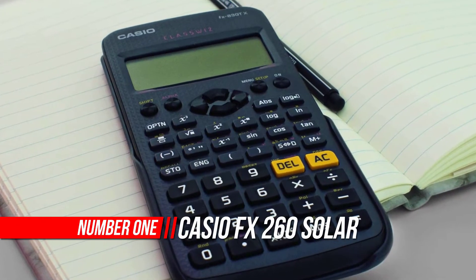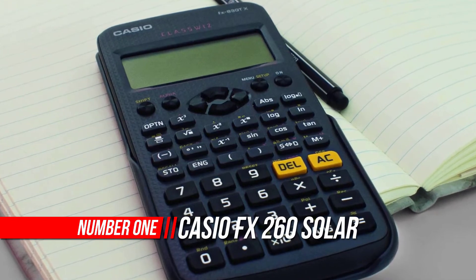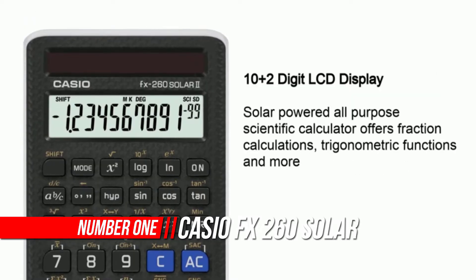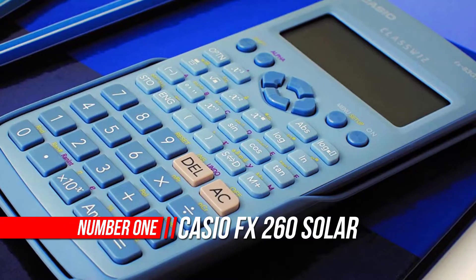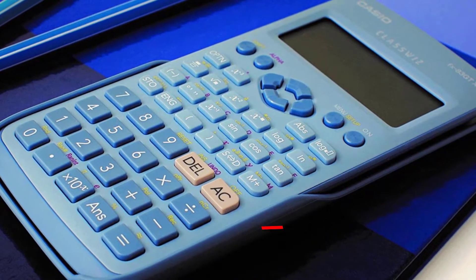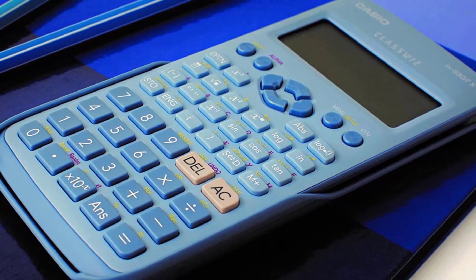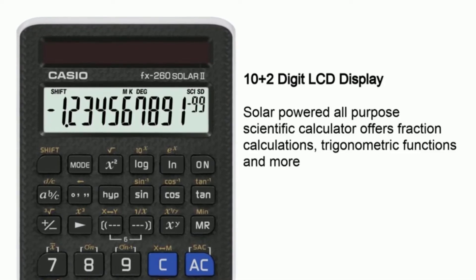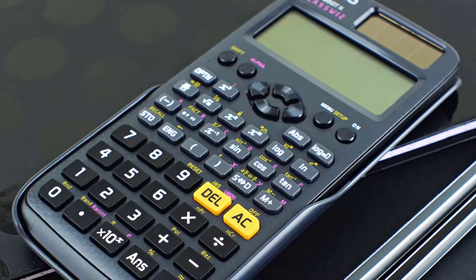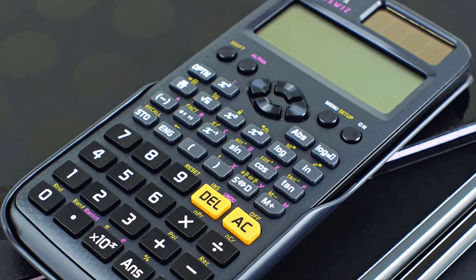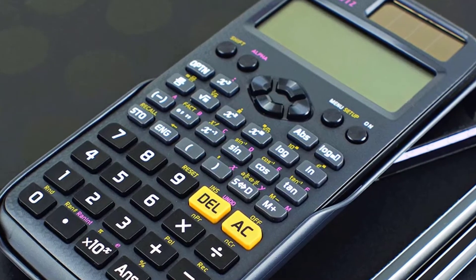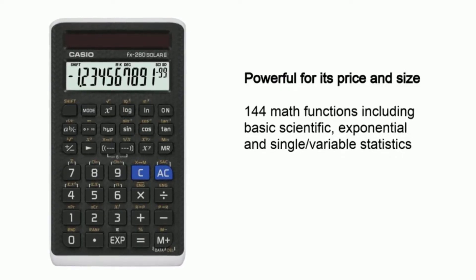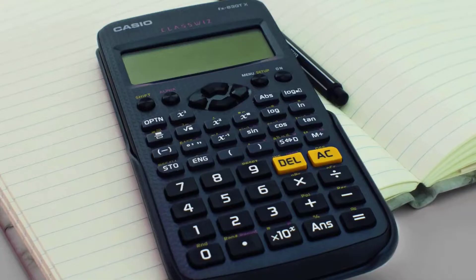Number one: Casio FX-260 Solar 2 Scientific Calculator. This scientific calculator features a 10-digit display with two extra digits to tackle a variety of calculations in an easy-to-use device. The solar-powered design provides complete reliability for convenient use virtually anywhere, and a slide-on hard case protects the calculator when not in use for safe storage and transportation.